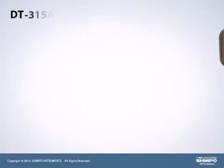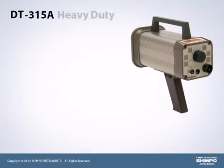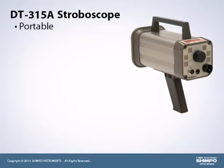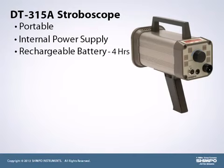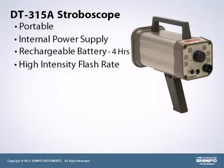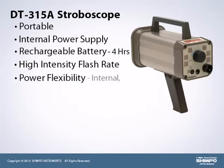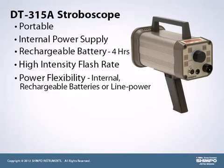The DT-315A heavy-duty battery-powered stroboscope possesses the added convenience of total portability via its own internal power supply. The quick recharge battery lasts up to 4 hours of full continuous usage with its high intensity flash rate. This unit provides power flexibility by utilizing either its internal rechargeable batteries or line power with the included AC charger adapter.